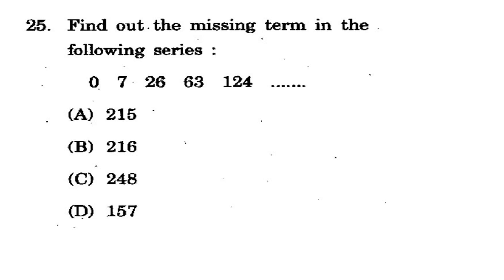Question 25: Find the missing term in the following series. Looking at the series given in this 2019 question paper, the options are 215, 248, 257. The correct answer is A - 215. You can find the logic and verify it in the comment section if you have practiced. Work out the pattern to confirm.